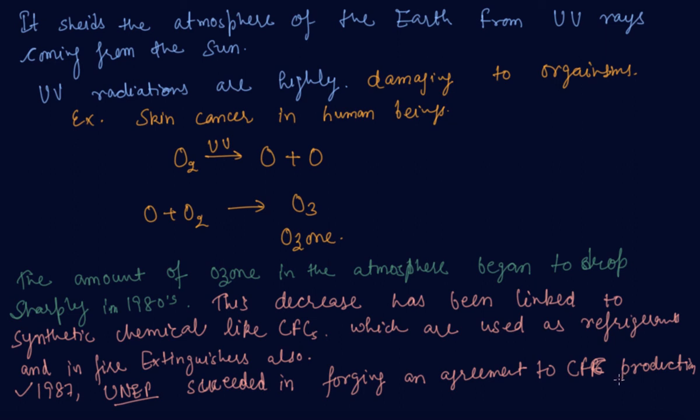So this is how we were depleting our ozone layer which is protecting us from the UV radiations. This is all about the ozone layer and how it is getting depleted. In the next lecture, we are going to discuss about managing the garbage we produce. If you have any doubt or any question based on this lecture, please do comment in the comment section. I will be happy to help you. Thank you.